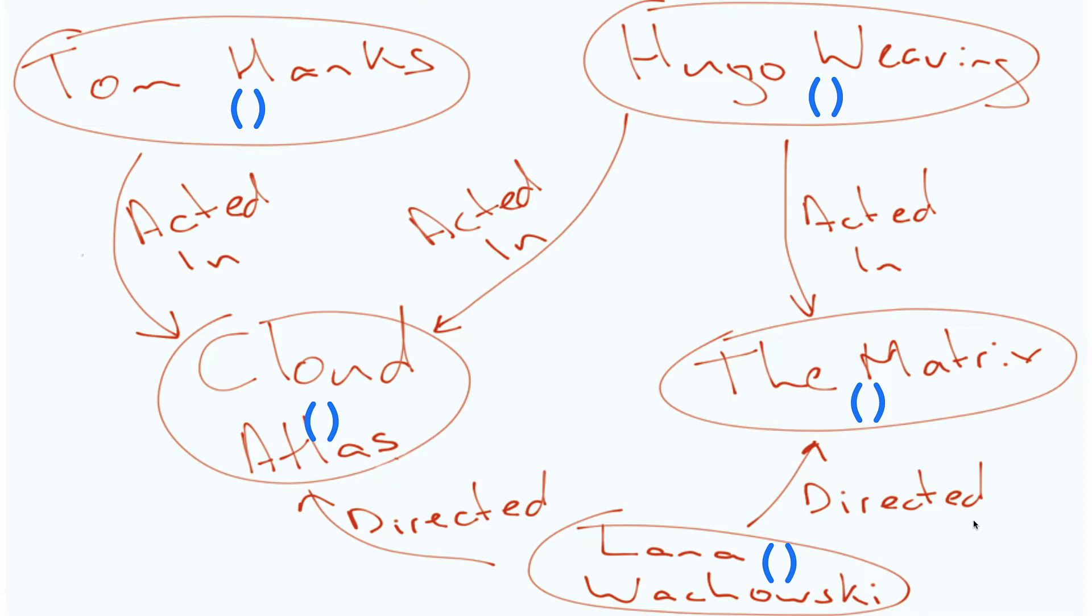Labels are used to group nodes that have the same general set of properties. In Cypher, we use the colon followed by the label to specify the label for a node. In our sample graph, person nodes represent people and movie nodes represent movies.